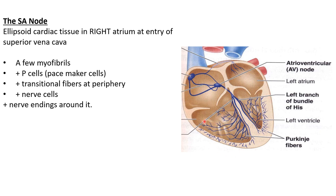In the atria, the conducting tissue supplies one interatrial fiber to the left atrium and three intra-atrial branches. The brown-colored tissue represents the contractile cells — of the left atrium, right atrium, right ventricle, and left ventricle — while the blue tissue is the conducting tissue.